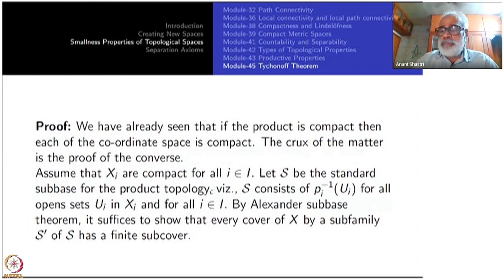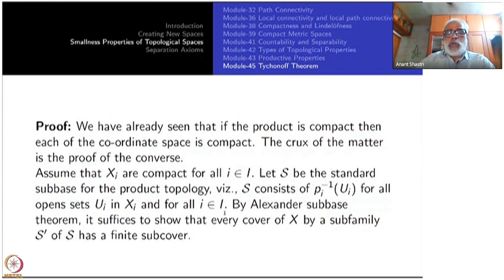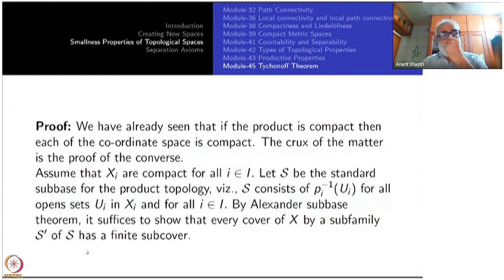Now we have to prove the converse. Assume that each Xi is compact. Let S be the standard subbase for the product topology, consisting of all Pi-inverse of Ui for all open sets Ui inside Xi and for all i. By Alexander's Subbase Theorem, if we show that any open cover whose members are from S admits a finite subcover, that is enough.